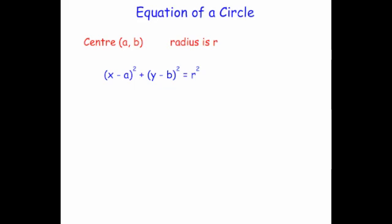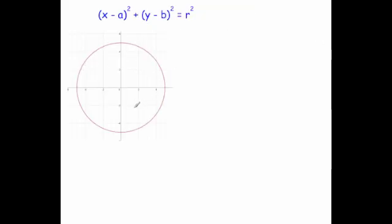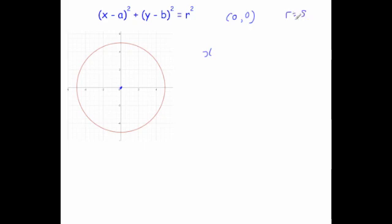If we were given this circle here and wanted to write the equation, the center is at (0, 0), and the radius of the circle goes 0, 2, 4, 5 — so the radius is equal to 5. Then we just need to substitute these values in.